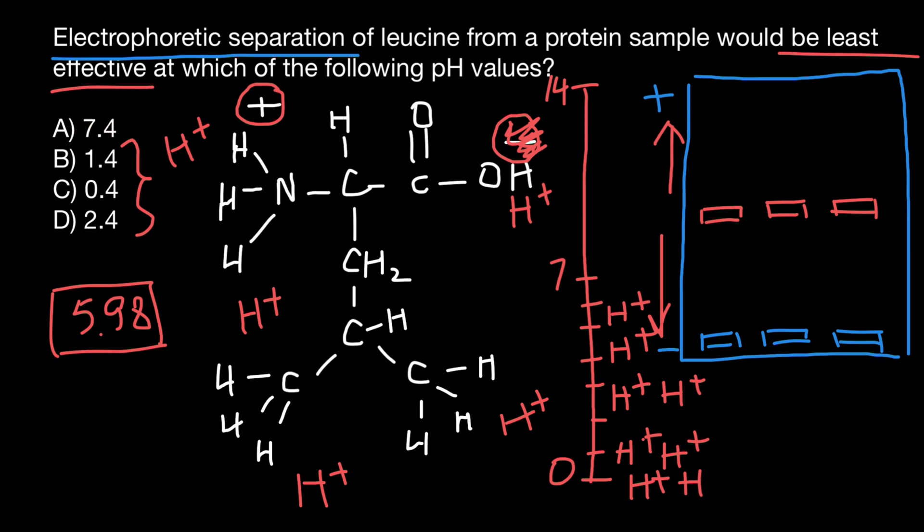But this pH value is close to the isoelectric point of this amino acid. And at this pH, most of the amino acids, leucine, would exist as zwitter ion and would have positive and negative charge and would be net neutral. And it would be hard to separate at this pH value. So our choice is answer A.